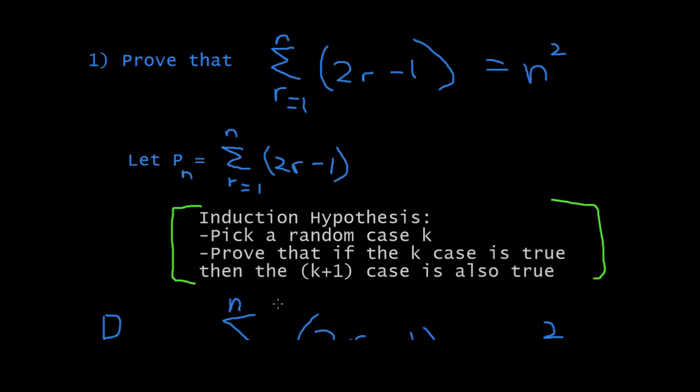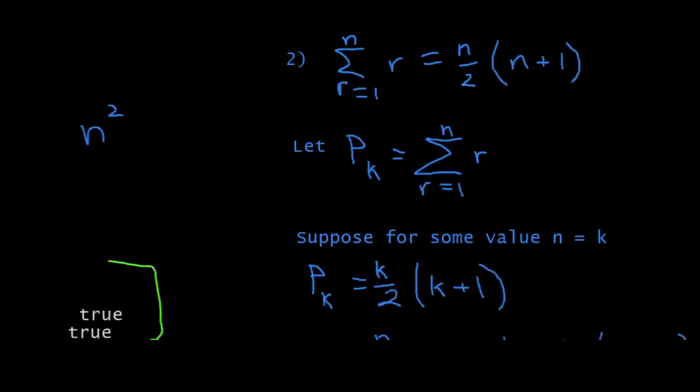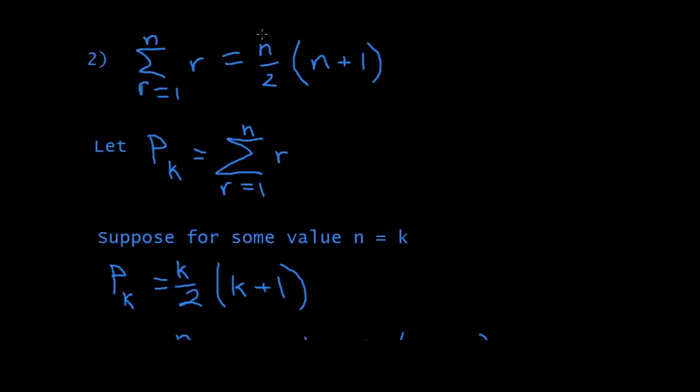So, we'll try one more. They'll say, prove by mathematical induction that the summation of R is equal to N divided by 2 times N plus 1. So, how do we prove this? First step, you have to let P... You're not supposed to bring in the K yet. So, this is just N. So, it's PN is equal to the summation of R.